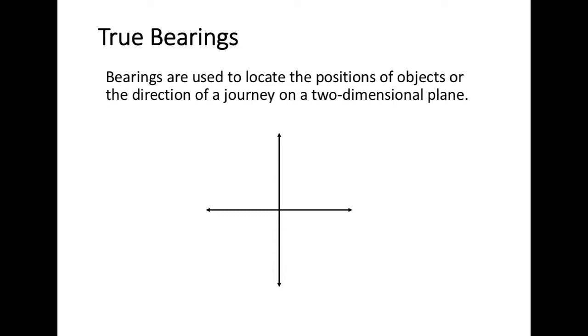When we are looking at bearings and directions, normally we would use a compass with north, east, south, and west to help us provide directions between two points or look at the bearings as to where we are going.